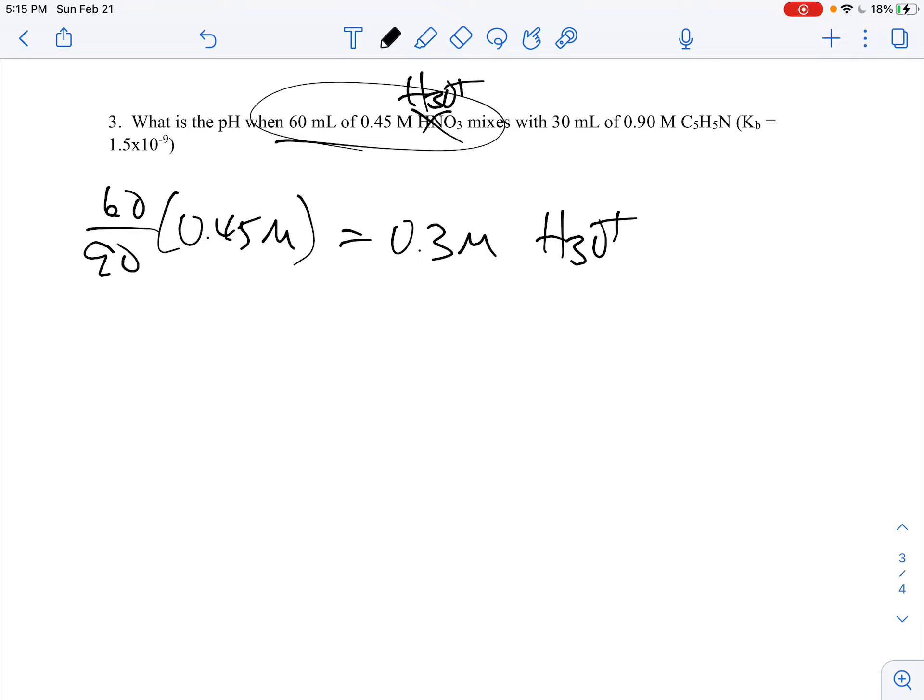And then for my other one I'm going to have 30/90ths or a third of 0.90 molarity, and that's going to be 0.3 molarity of this guy here C5H5N who has a Kb of 1.5×10^-9. You can tell that these guys are at the equivalence point because they are both 0.3 molarity. Now it didn't look like that up here, but once you do the dilution factor and realize that you are at the equivalence point here, then you're in pretty good shape.